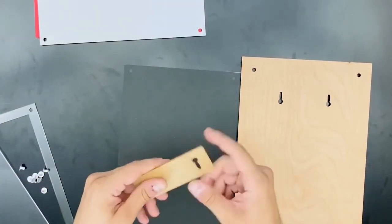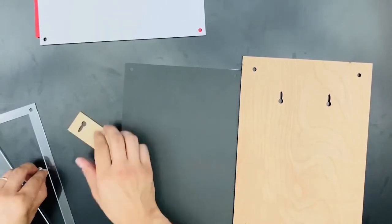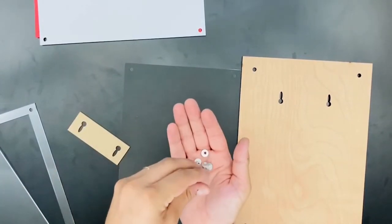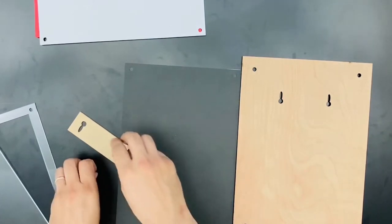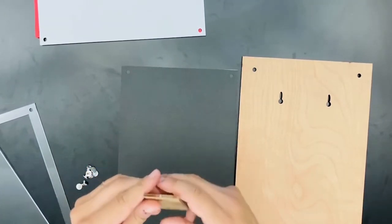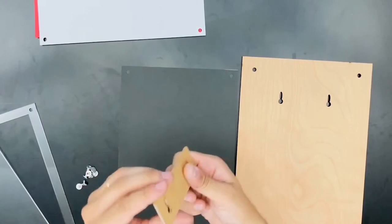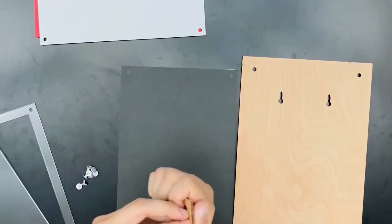This is your hanging template. Before you actually put the frame together, you're going to want to make sure that you got the holes lined up in your wall correctly, and so this template is going to help you do that.